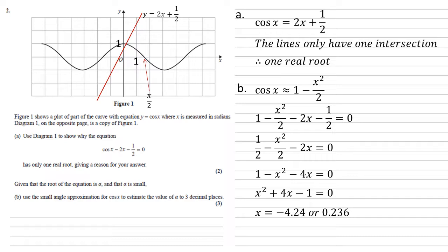But we know that alpha is small, and we can see on our graph from where the lines intersect that it's a lot smaller than 1 but still positive. So we can only have one answer, and it must be the 0.236.